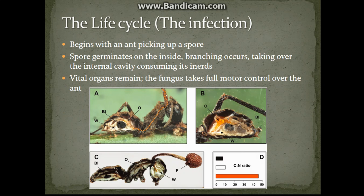These hyphae will progressively branch and invade the internal cavity of the ant while simultaneously breaking down and consuming the ant for nutrients — in other words, the ant is essentially getting digested from the inside out. As you can see in this photo, you can get a good idea of what the fungus is doing to the inside of the ant. The fungus will keep digesting the ant until all that remains are vital organs, keeping the insect intact for just a couple more hours.